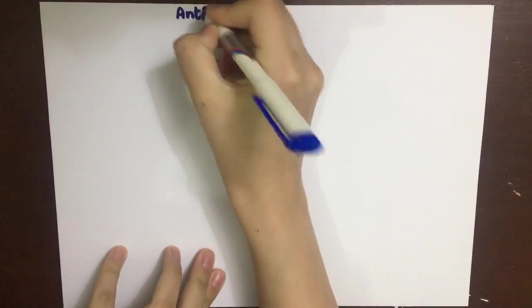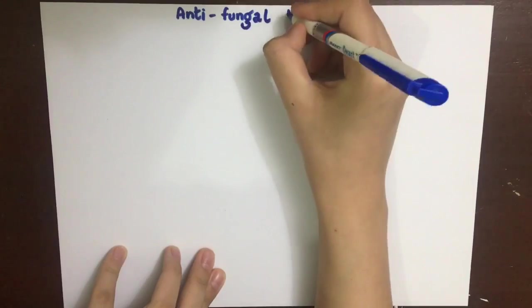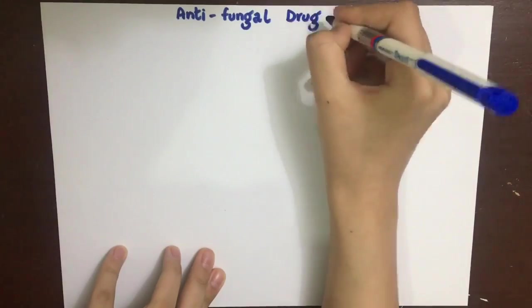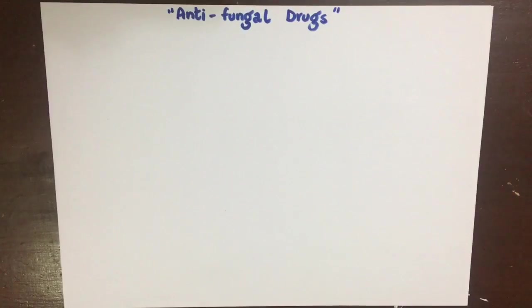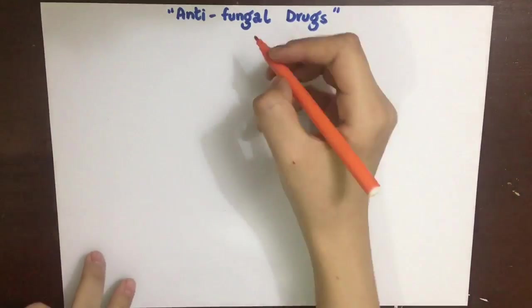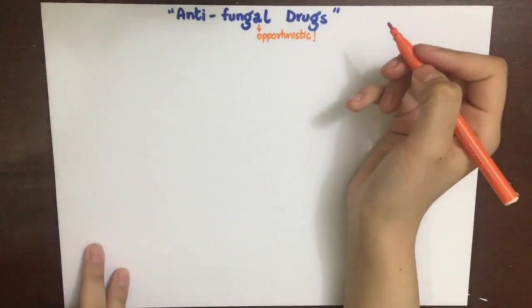Fungal infections are mainly opportunistic in nature. When the immune system goes down, the fungus takes advantage and causes infection. The immune system can go down in AIDS, diabetes, cancer, pregnancy, etc. The drugs we use to cope with these infections have different sites of action or targets.